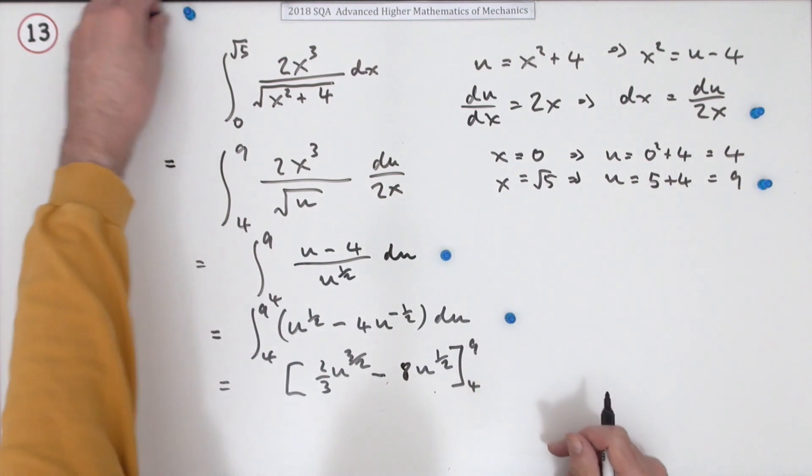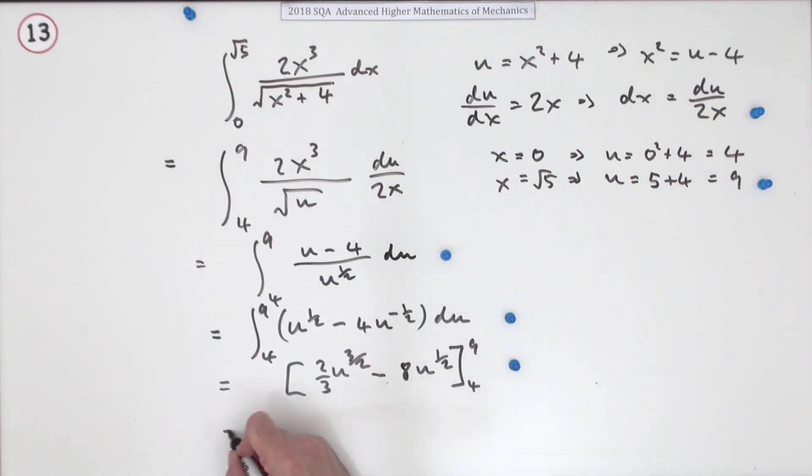One mark left for working it out. It's (2/3) of 27 minus 8√3, minus (2/3) of 8 minus 8(2).